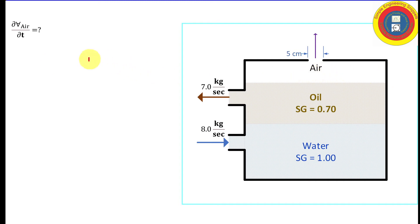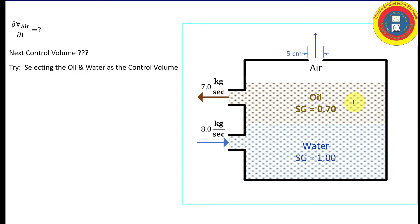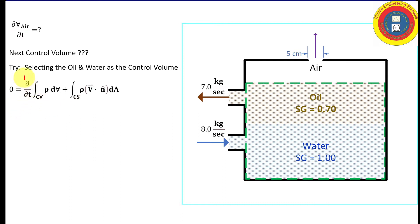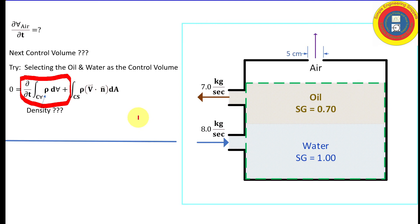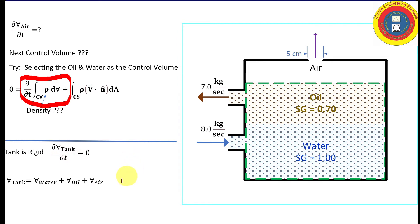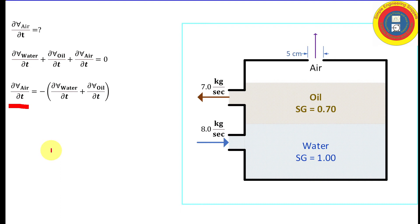We need to find the time rate of change of volume of the air in the tank, so we apply Reynolds Transport Theorem again. Rather than selecting both oil and water as one control volume — which makes the density term problematic — we use the fact that the tank is rigid and contains three fluid volumes: water, oil, and air. Since the tank is rigid, the time rate of change of total volume is zero. Therefore, dV_water/dt + dV_oil/dt + dV_air/dt = 0, and we can solve for dV_air/dt.